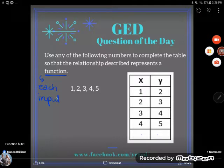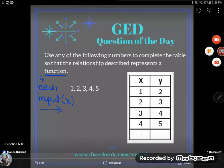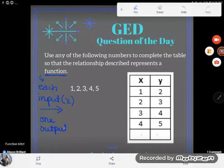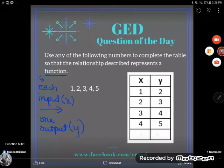So right now, currently this is a function. Right here I have a 1 and it's mapped to 2, a 2 and it's mapped to 3, a 3 and it's mapped to 4, 4 and it's mapped to 5.